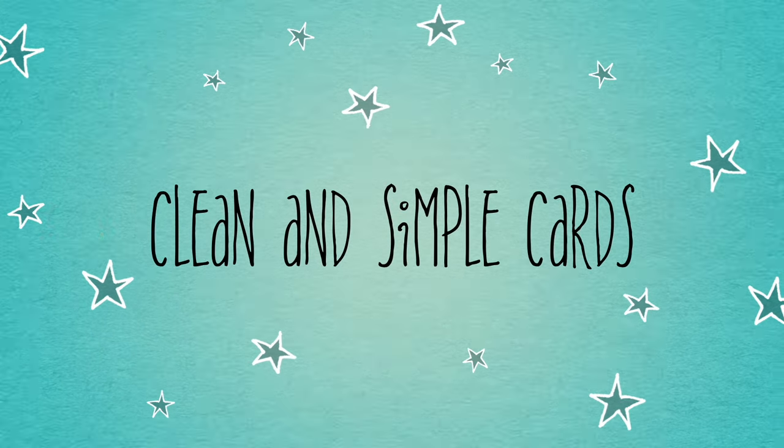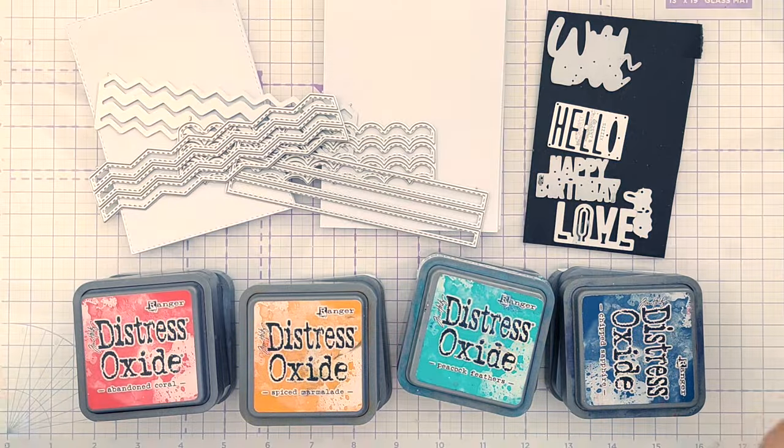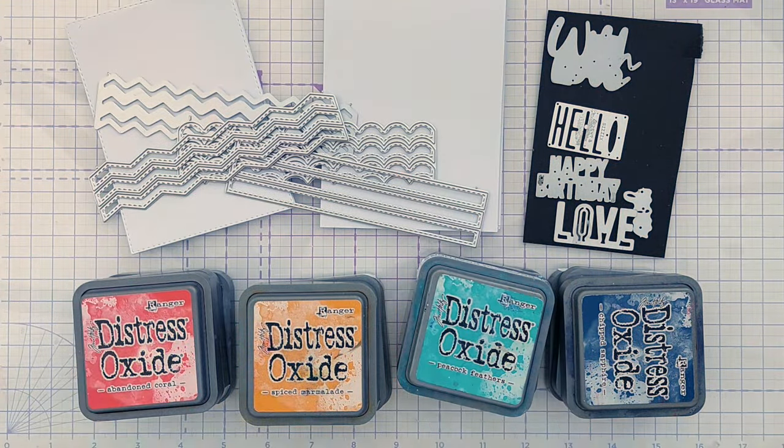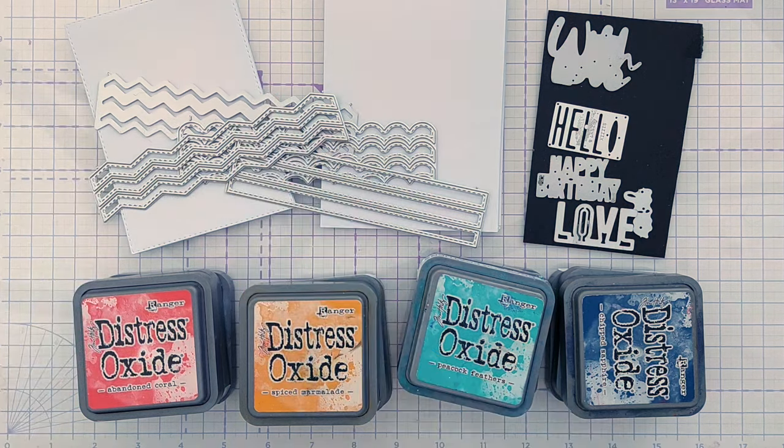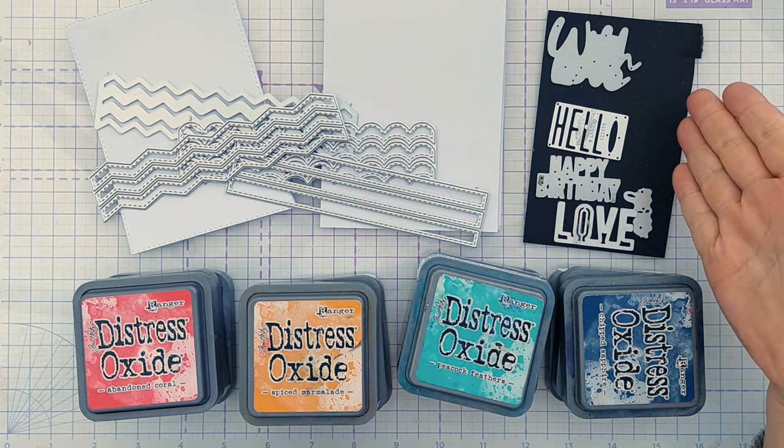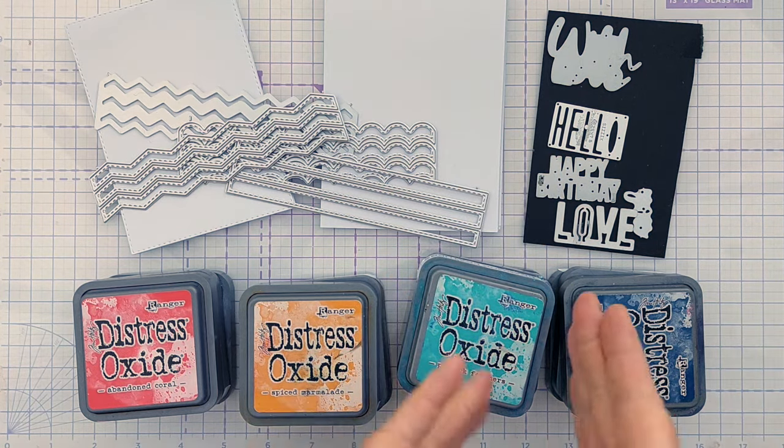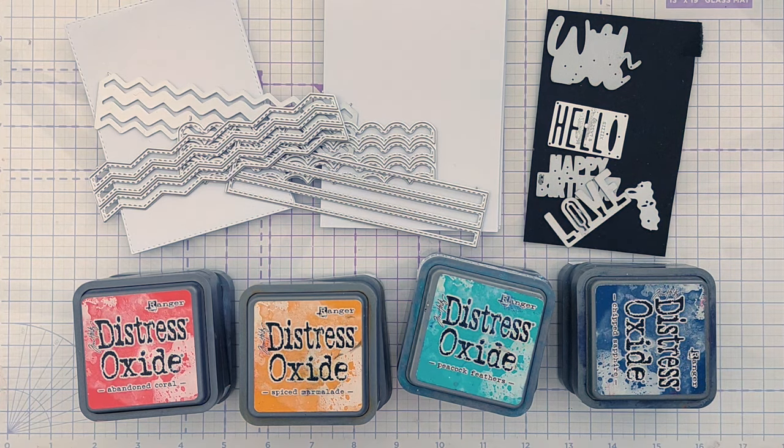Hello crafty friends, welcome to today's clean and simple card making video. Today I have four dies, four stitched rectangle panels cut from smooth white cardstock, four card blanks, four sentiments I'm going to cut from black card, and four stacks of a trio of distress oxides.